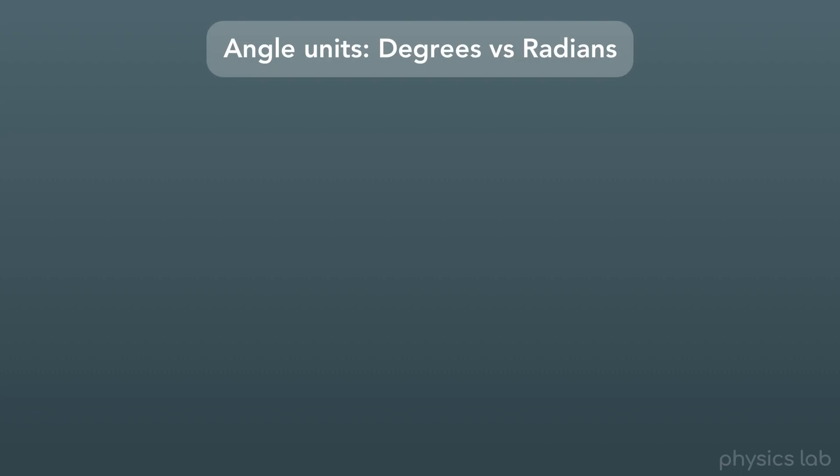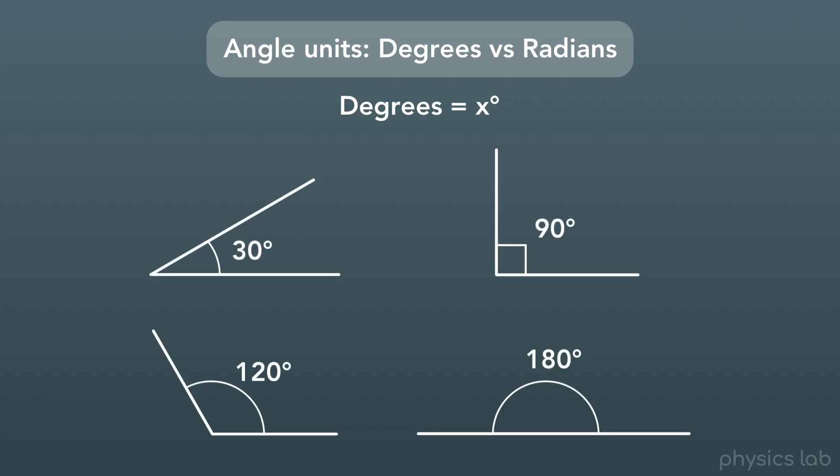What is a radian? Well, in our everyday lives and in this video, we've described angles using the unit of degrees, which has that little circle symbol above the number. Here are some angles measured in degrees.